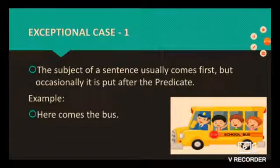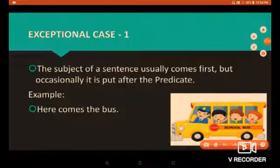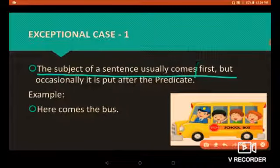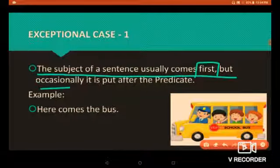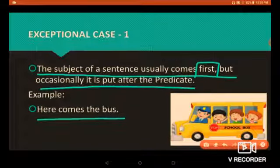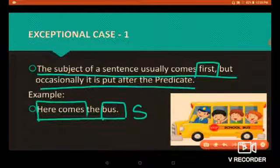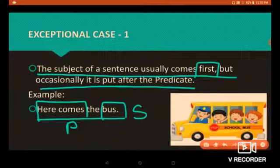There are two exceptional cases. The subject of a sentence usually comes first, but occasionally it is put after the predicate. For example: 'Here comes the bus.' In this sentence, we are speaking about 'bus', so 'bus' is the subject. 'Here comes' is the predicate of the sentence because it describes the subject.